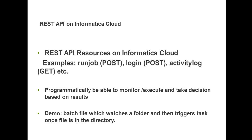The Informatica Cloud REST API is request and response based, meaning when we send a request to the REST API — for example, to run a job for a particular task — the REST API will send us a response from the system indicating if the task or function has been successful or not. This response is either in JSON or XML format.